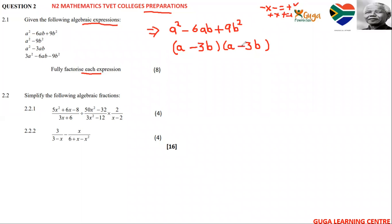You have to be careful on the sign. To prove it, you use the FOIL method. You take the first term and multiply with the second bracket, and do the same for the others. So a times a gives a squared, a times negative 3b gives negative 3ab, negative 3b times a gives another negative 3ab, and negative 3b times negative 3b gives positive 9b squared. So we are done with the first one.